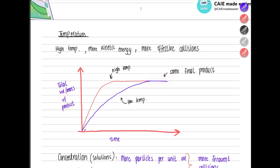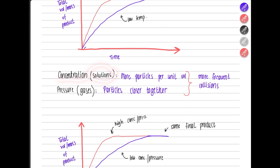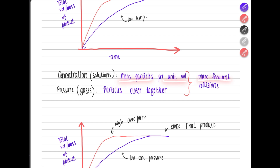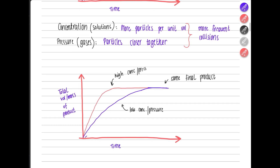Another factor is concentration — relevant for solutions — or pressure, relevant for gases. Higher concentration means more particles per unit volume, so collisions are more frequent and the rate is higher. Higher pressure means particles are closer together, again making collisions more frequent and increasing the rate. The graph is steeper and flattens more quickly, but the final volume of product is the same for both.